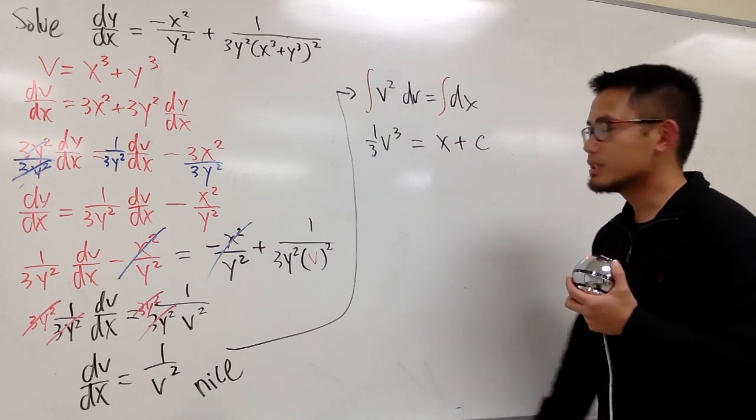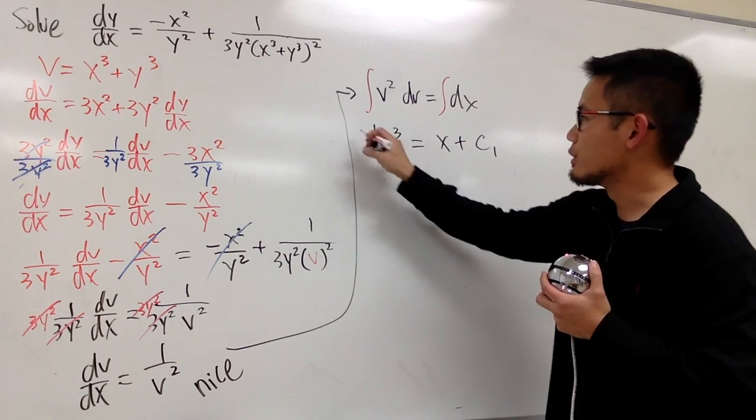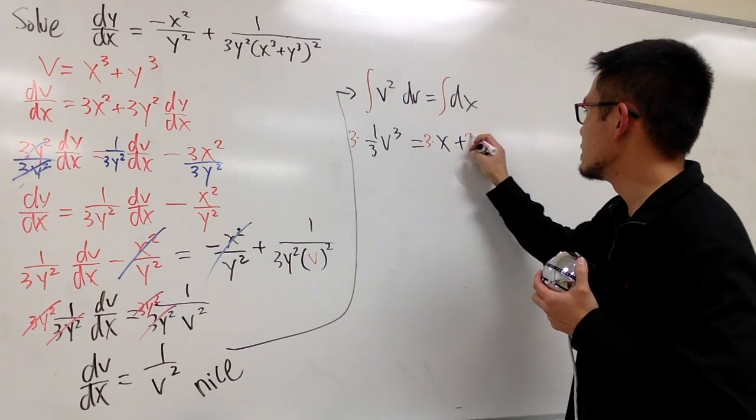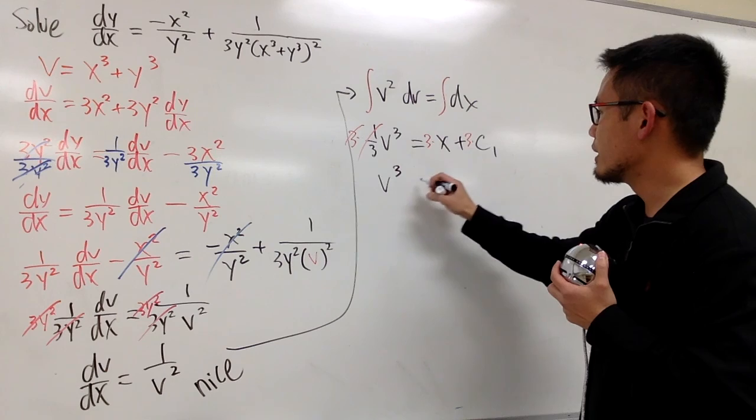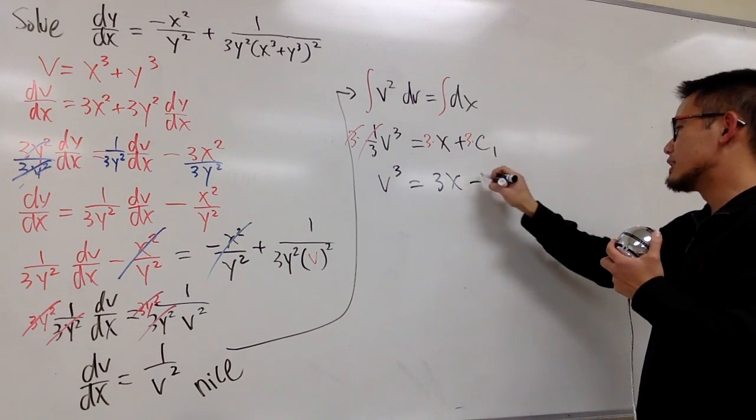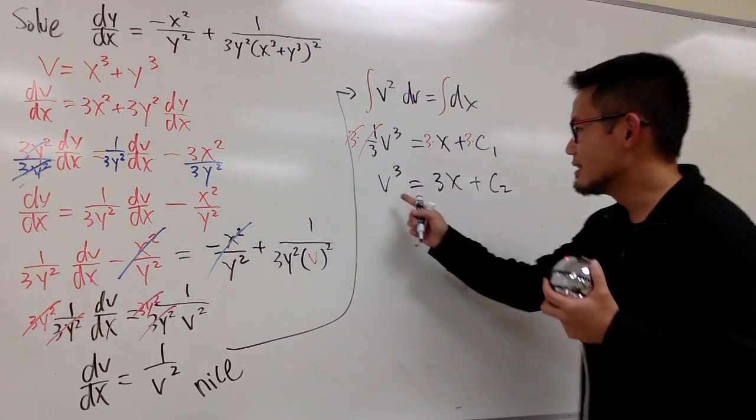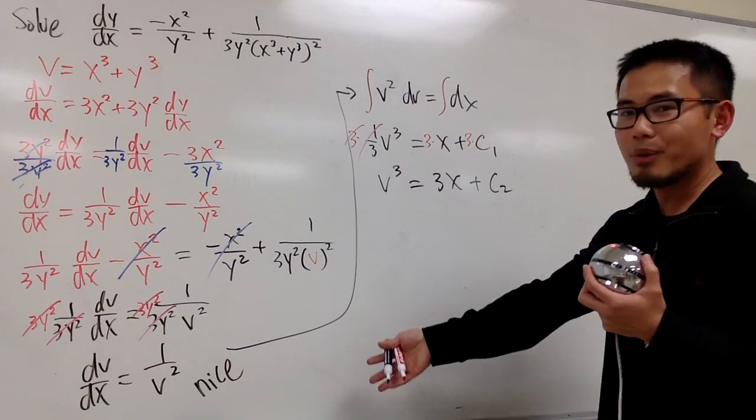And depends on how you want to do it, you can say this is c1, and let's multiply everything by 3. So you can see this is 3 times this, 3 times this, 3 times that. So you cancel this out, we get v to the third power equals to 3x, 3 times c1 is just c2. And we're done, because this is v to the third power, right? We're done with pretty much the solving part.